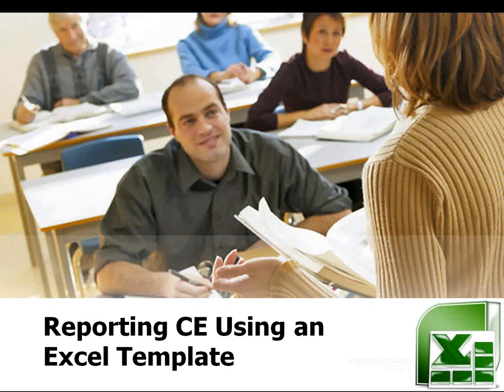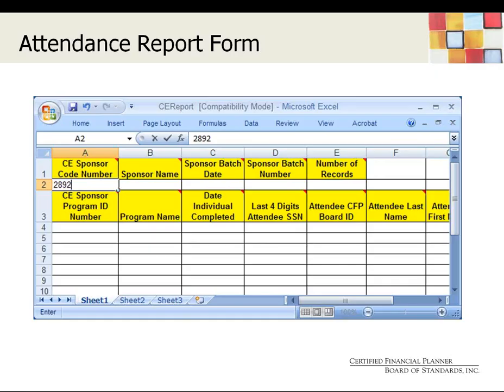Good afternoon. This part of today's presentation is intended to be a tutorial for sponsors on how to report CE hours using the Excel template provided by the CFP Board. We'll review what form is to be used to report CE and how to fill this form out. We'll also go over how to avoid some of the common mistakes that often cause processing delays. You can find this form by going to www.cfp.net and navigating to the Continuing Education Sponsor page. Once on this page, you'll see a link for instructions on electronically reporting CE, and the template is available for you to download.